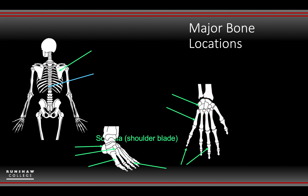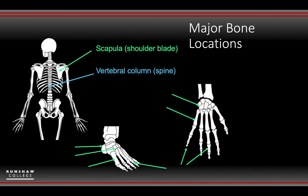Looking at the back, we've got the scapula as well as the vertebral column — again, green and blue to indicate appendicular and axial skeleton. In the hands, we are looking at carpals and metacarpals. The carpals are in the wrist area, whereas the metacarpals form the palm of the hand, which can be felt if you manipulate around the palm.